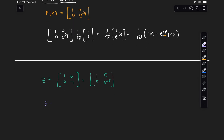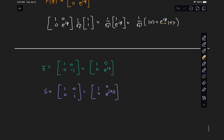We also have the S gate, which is of the form [1, 0, 0, i], or equivalently [1, 0, 0, e^(i·pi/2)], so it adds a phase of pi over 2. And then we have the T gate, which is of the form [1, 0, 0, (1+i)/√2], or also [1, 0, 0, e^(i·pi/4)], so it adds a phase of pi over 4 to the equal superposition state.